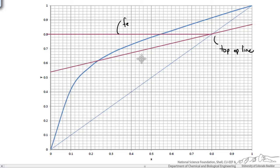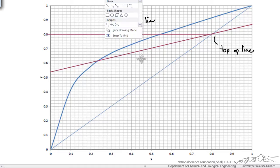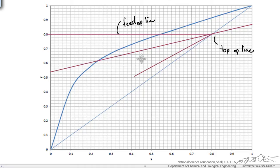So now we have our top operating line and our feed operating line. What is our bottom operating line? If we follow the same general rule where we take the intercept of our feed in our top section and draw it down to our bottoms composition, it doesn't matter where it is here, it has to follow the x equals y line. The other thing to keep in mind is that for our bottom section we have total reboil. Everything is going back into the column and therefore the slope of that operating line is 1 and follows our x equals y line anyway. So this is our bottom operating line.